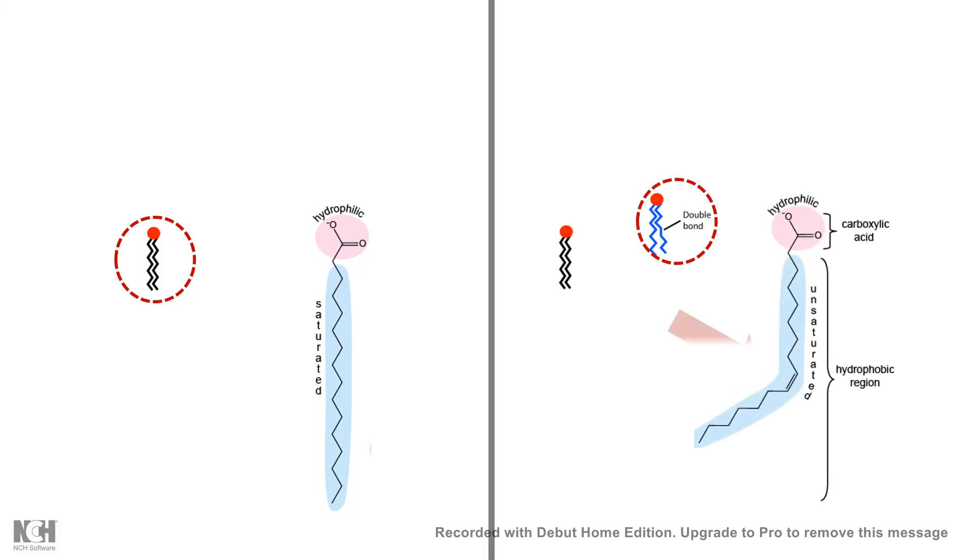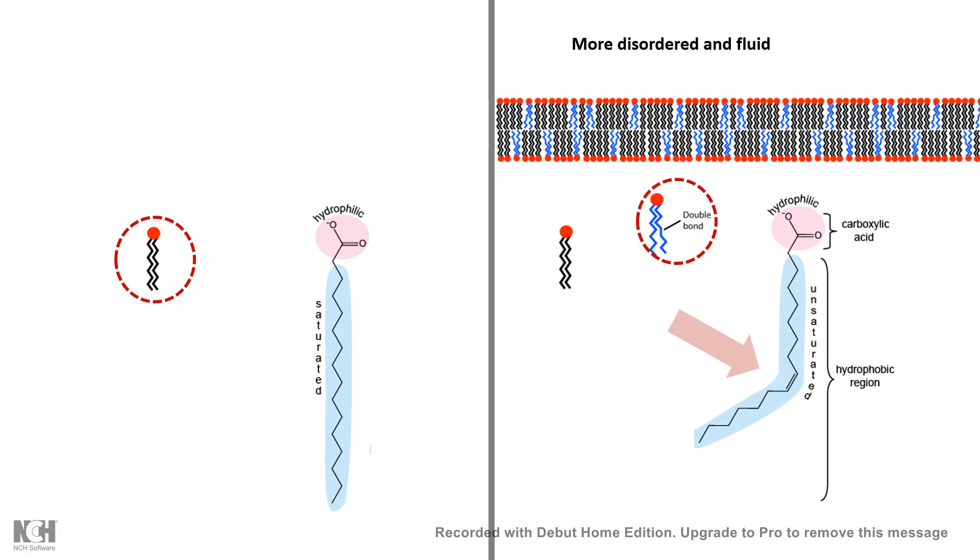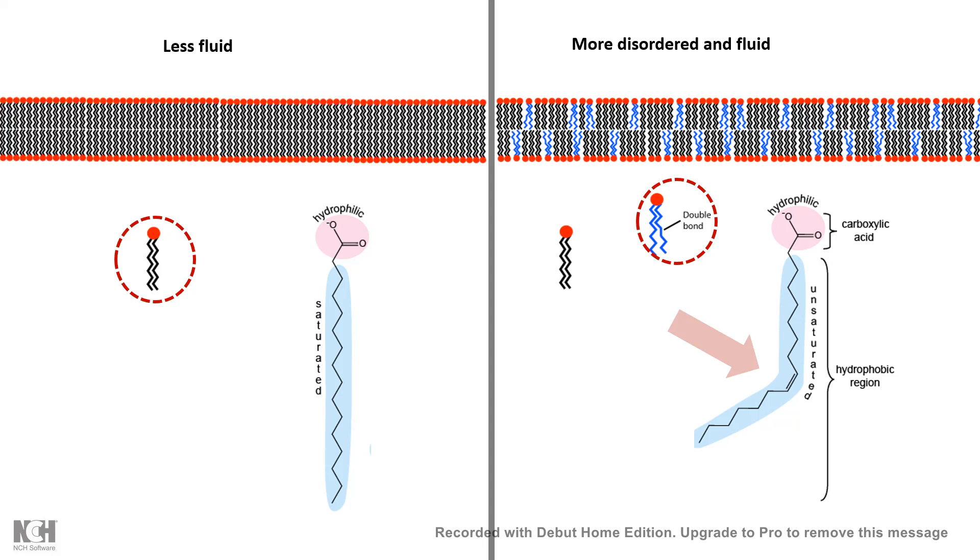But if a membrane is a mixture of saturated and unsaturated phospholipids, then there would be kink in the unsaturated phospholipids. And due to that, the membrane would be more dynamic and fluid.